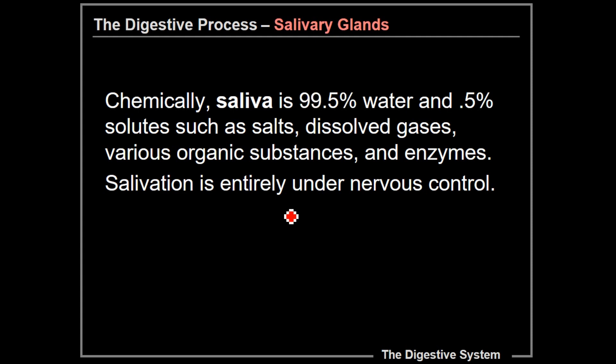Salivation is entirely under nervous control. This comes into why we salivate. I'm sure any of you that had psychology have talked about Pavlov and his dogs, where he was able to get his dogs to salivate or drool just by ringing a bell. The dogs associated the ringing of the bell with being fed and they started to salivate. So a lot of times when we see or smell or even think about food, we start to salivate, and again, that's all under our nervous system's control.